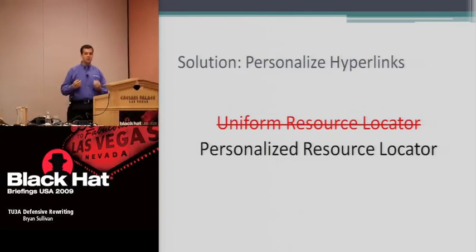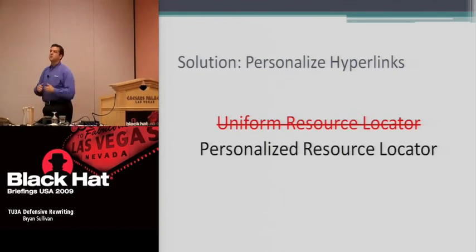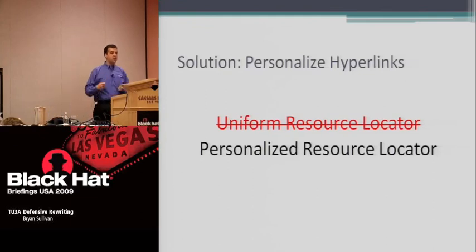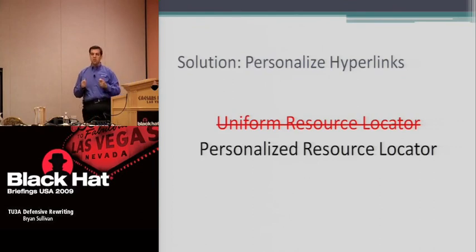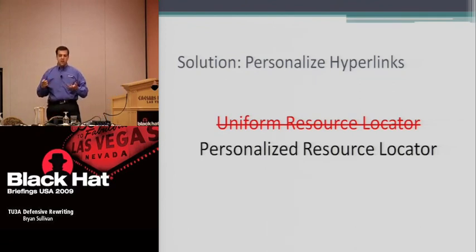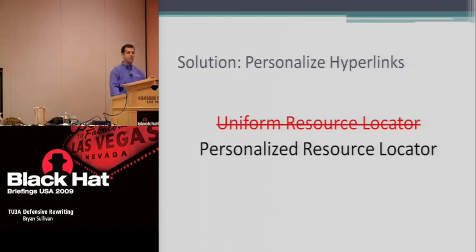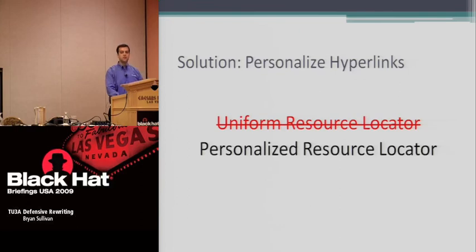My solution is, in addition to all these different mitigations, to mitigate the problem by moving away from a uniform resource locator — something that works for everyone — and instead going to a personalized resource locator, a URL that only works for you. If an attacker creates a malicious link, the only person that link affects is the attacker himself. And the best part is we can apply this retroactively to existing sites with no code changes, using URL rewriting.